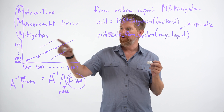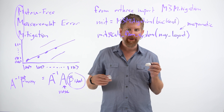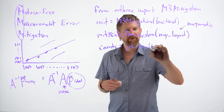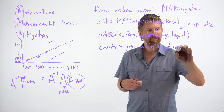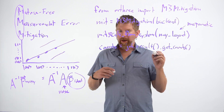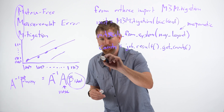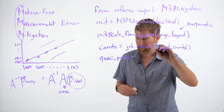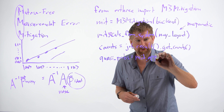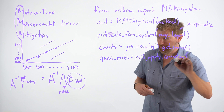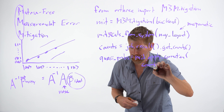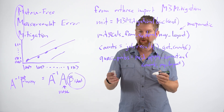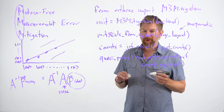This runs an experiment on the quantum computer, which essentially replicates the calibration process. Then we want to apply it to a job that we've already run. So we already have the counts from another job: counts equals job dot result dot get_counts. And then we just need to put those into the mitigation routine: mitigated quasi-probabilities equals mit dot apply_correction. That's going to take the counts from our experiment and the layout of our qubits, and it contains the error correction already. So this will return the mitigated results for you — now they're quasi-probabilities instead of probabilities.